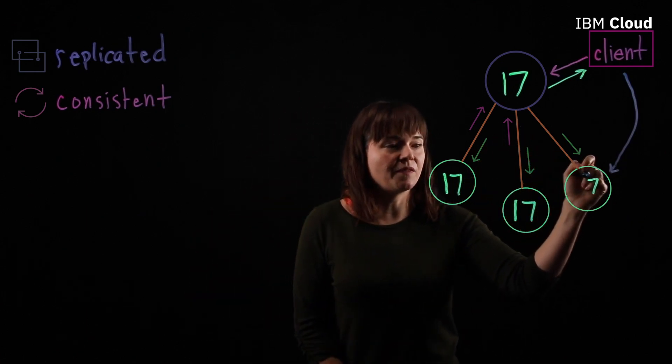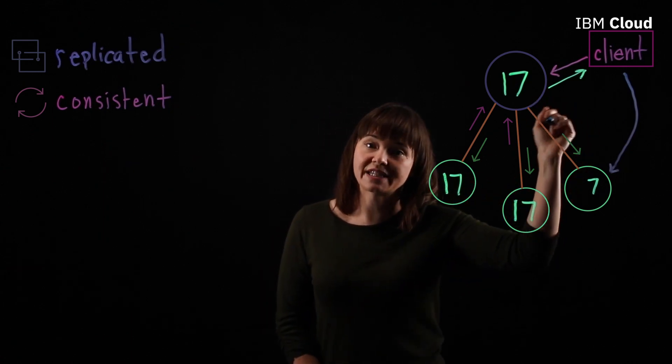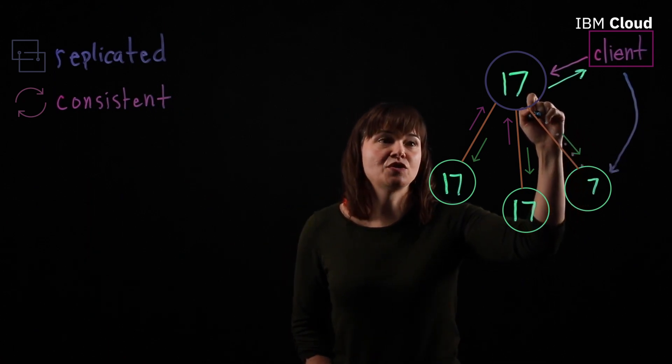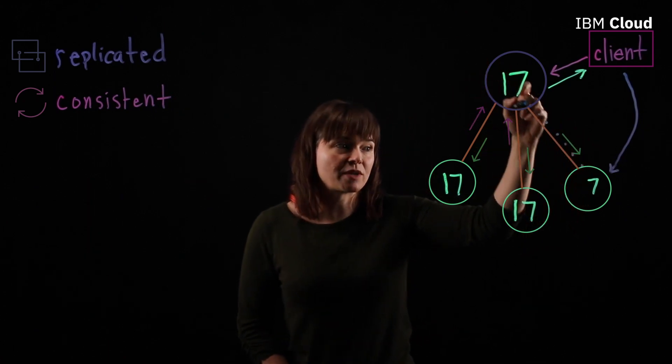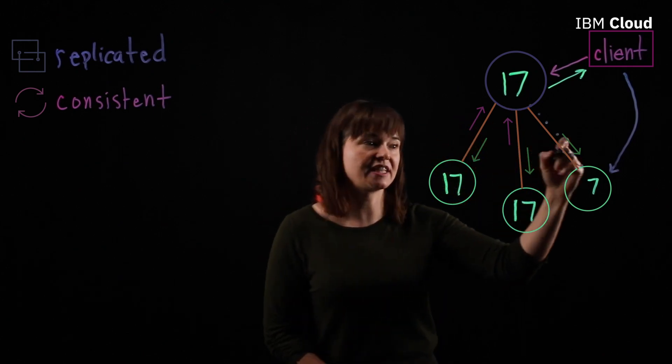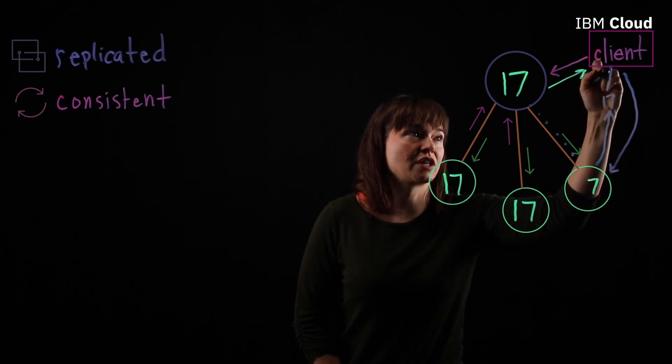Well, this follower node knows it's a follower node and knows it's not authorized to answer the client directly. So what it's going to do is forward that request to the leader node, which will then respond, the cluster's current value at key one is 17. And so it will get a response of 17 to the client.